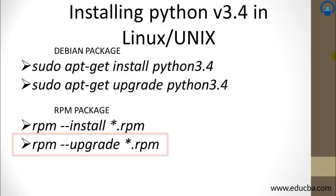Once you have installed Python 3.4 in your system — wait, there is another thing I need to tell you. You should also install Python 2.7.9. The reason is that as I proceed with the course I will be giving you some examples that also work with 2.7.9, because as of now, 2.7.9 is much more widely used than Python 3.4.